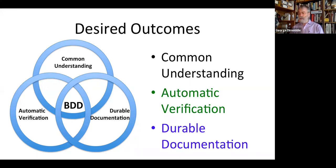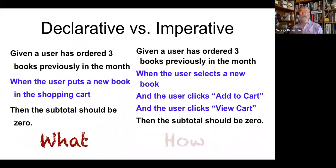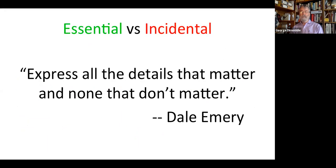One of the ways that people often talk about doing this is the declarative versus imperative — talking about what you're trying to do rather than how. And this is a good beginning. But there's also a matter of what details you put in. Dale Emory says — he didn't originate this, he got it from someone else, but I learned it from Dale — to express all the details that matter and none that don't matter.